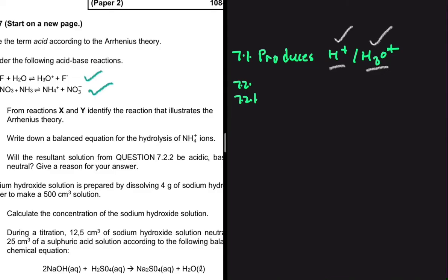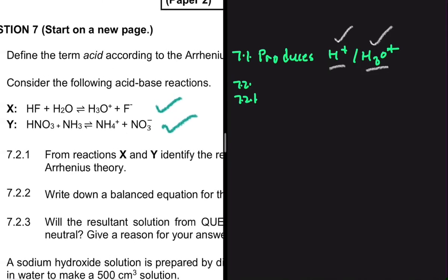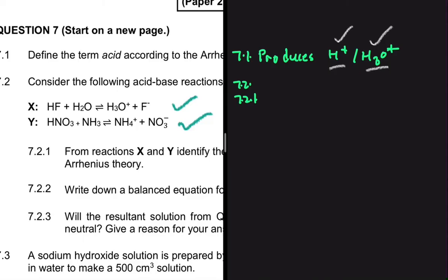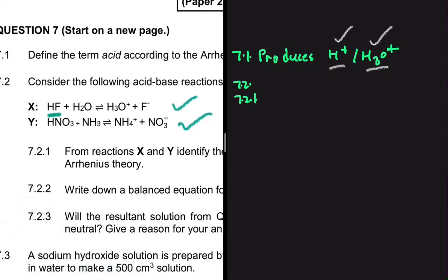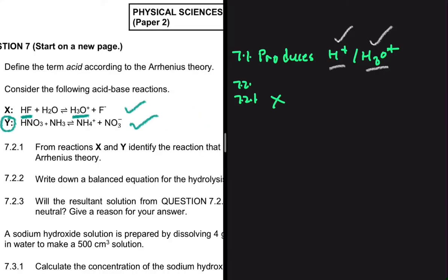We go to reaction X and reaction Y to see if we have a substance producing H+ or H3O+. In reaction X, HF produces H3O+ — it donates a hydrogen. In reaction Y, there is no H+ or H3O+ produced. So our answer to 7.2.1 is X. Reaction Y is a good example of the Brønsted-Lowry theory.